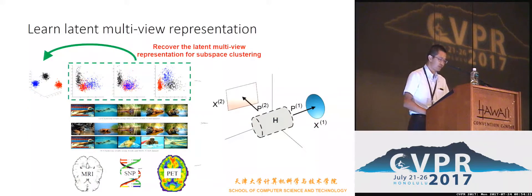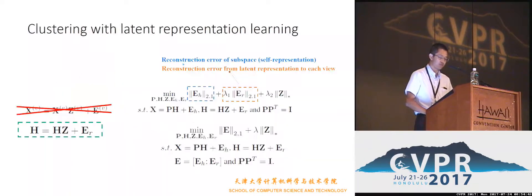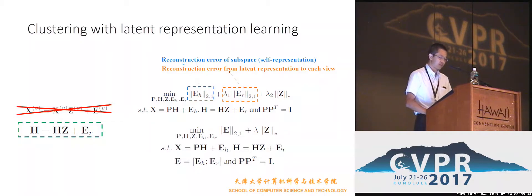In our model, we try to recover the latent multi-view representation and then use it to jointly perform subspace clustering. We want to recover a latent representation from each single view — for example, X1 and X2 — which can integrate the information from different views. Our objective function contains two error terms: one is the structural error of self-representation, and the other is the reconstruction error from the latent multi-view representation to each single view. By combining these error terms, we obtain the final robust objective function.